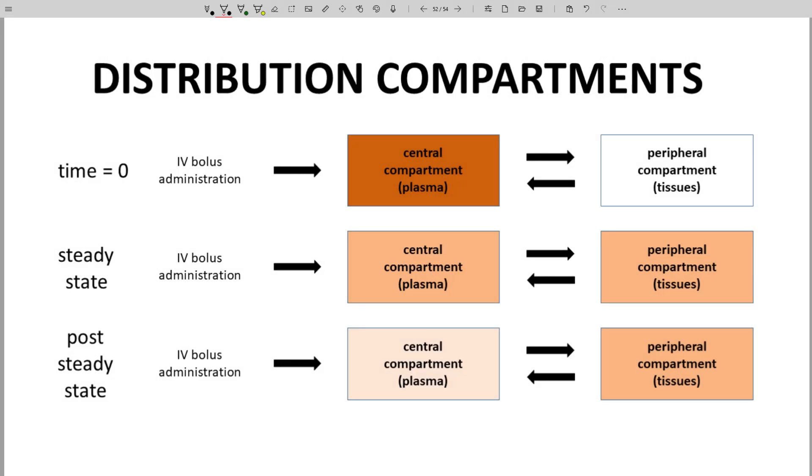Let's think about the dynamic nature of distribution for an IV bolus. When the drug is first administered at time zero, and in the case of an IV bolus, concentration in the plasma – the central compartment – is very high, but the concentration in the tissues – the peripheral compartment – is low. The molecule will distribute with a net flow to the peripheral compartment.